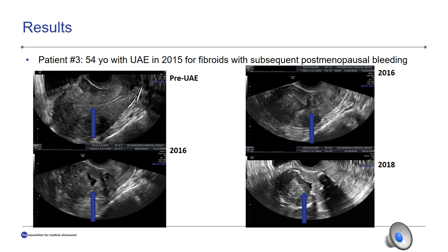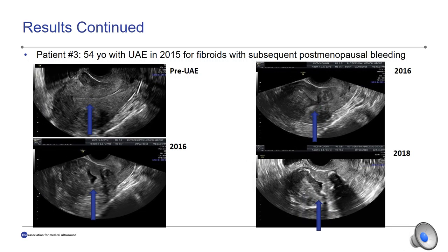Patient CC is a 54-year-old, P1, that presented for UAE in 2015 for fibroids. She re-presented with post-menopausal bleeding in 2019. Transvaginal ultrasound done preoperatively was significant for fluid noted in the endometrial cavity, increased in size from an earlier transvaginal ultrasound. Transvaginal ultrasound performed in 2015 prior to UAE showed no fluid collection; however, in January 2016, August 2016, and 2018, endometrial fluid collection was noted, with the size increasing over the years.